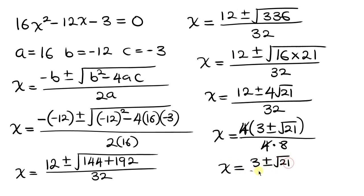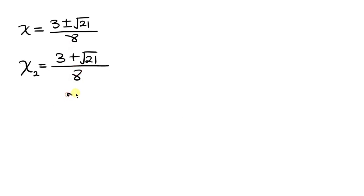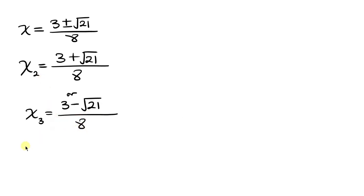So there are actually three values of x. Our first value is x equals 1/4. Our second value is x equals (3 plus square root of 21) all over 8. And our third value is x equals (3 minus square root of 21) all over 8.